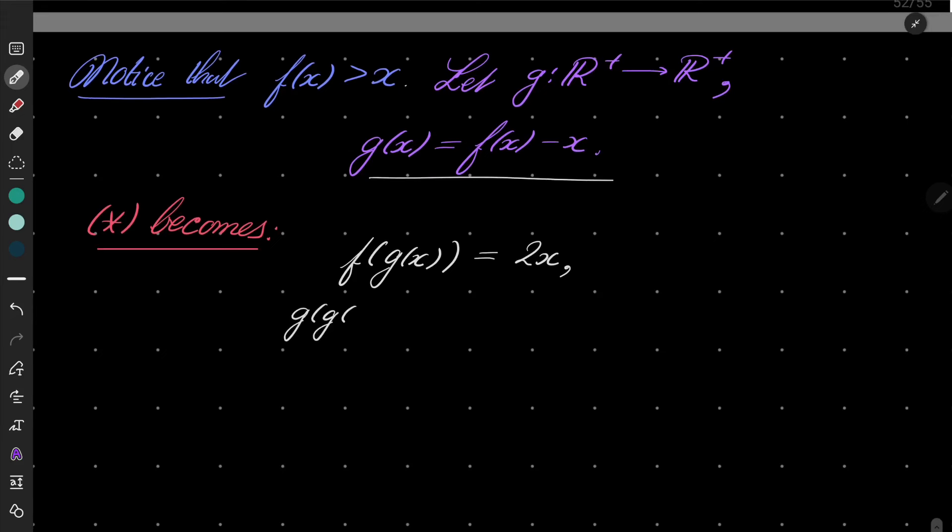So f of g(x) is just g of g(x) plus g(x). Let's put minus 2x on the left hand side.